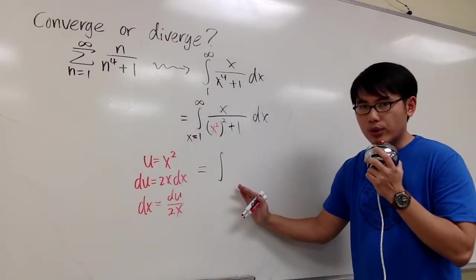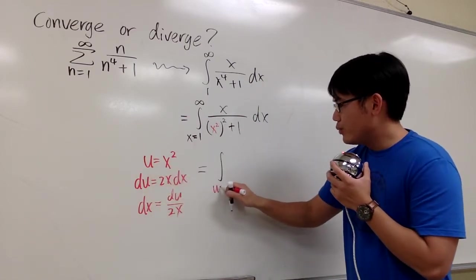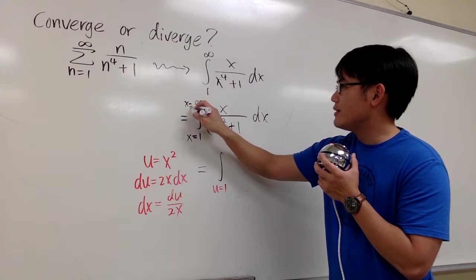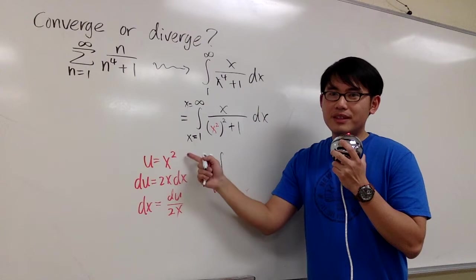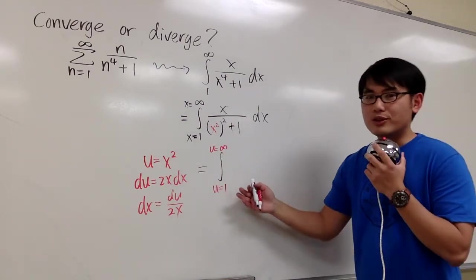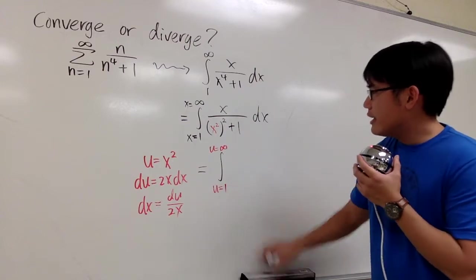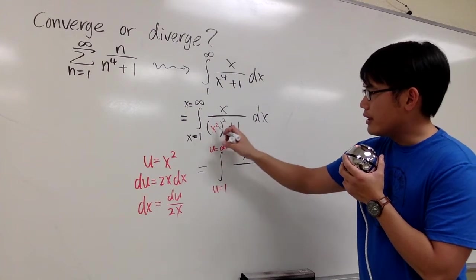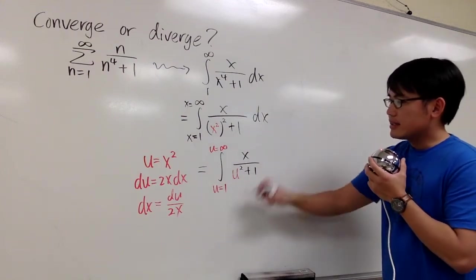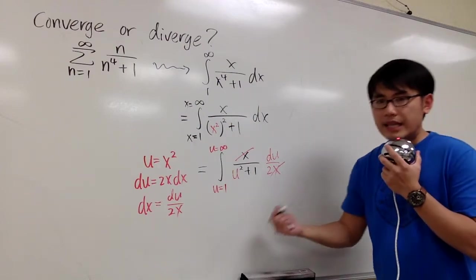If x was infinity, u equals infinity squared, which is still infinity. So the limits of integration happen to be the same: 1 to infinity in the x-world, 1 to infinity in the u-world. Now substituting: x on top, x squared in red becomes u, so we have u squared plus 1 in the denominator, and dx becomes du over 2x. The x and that x cancel each other out, and now we work in the u-world.